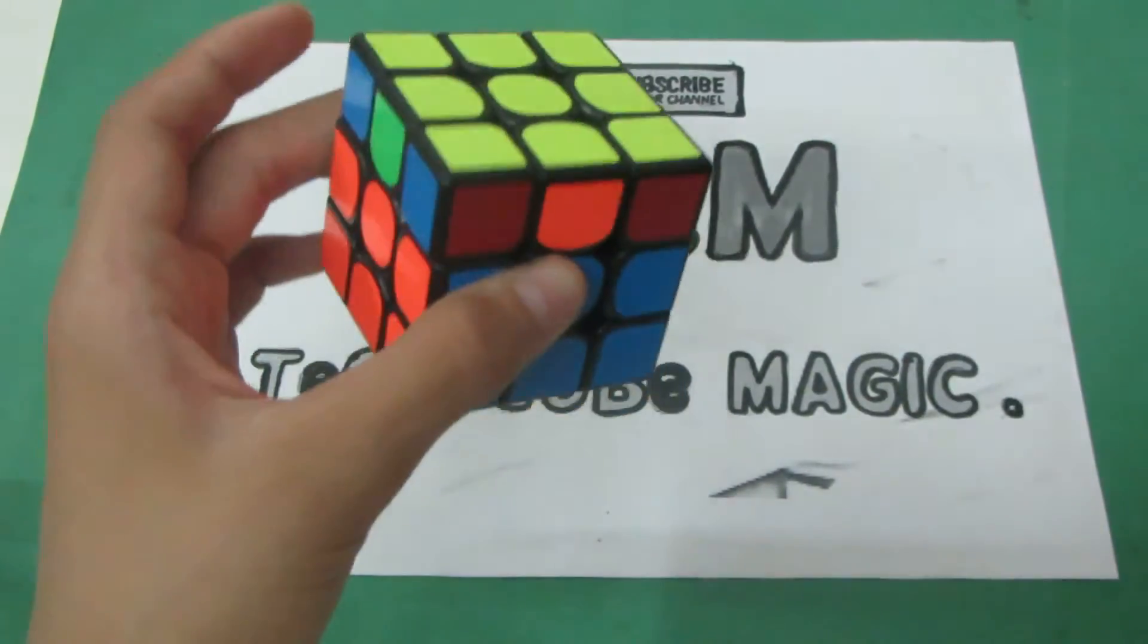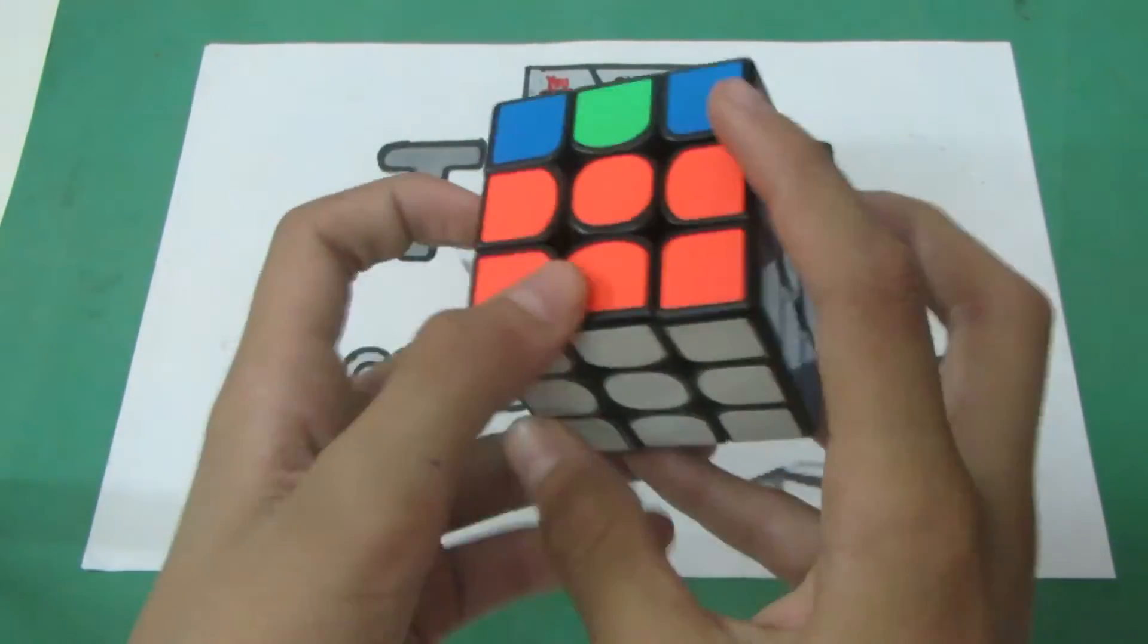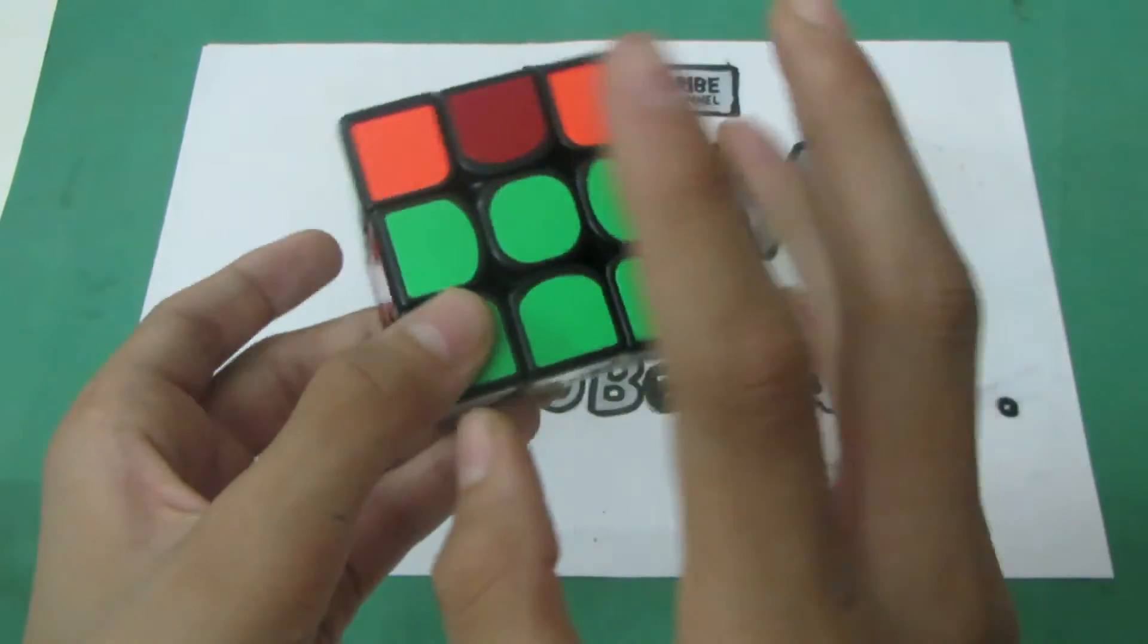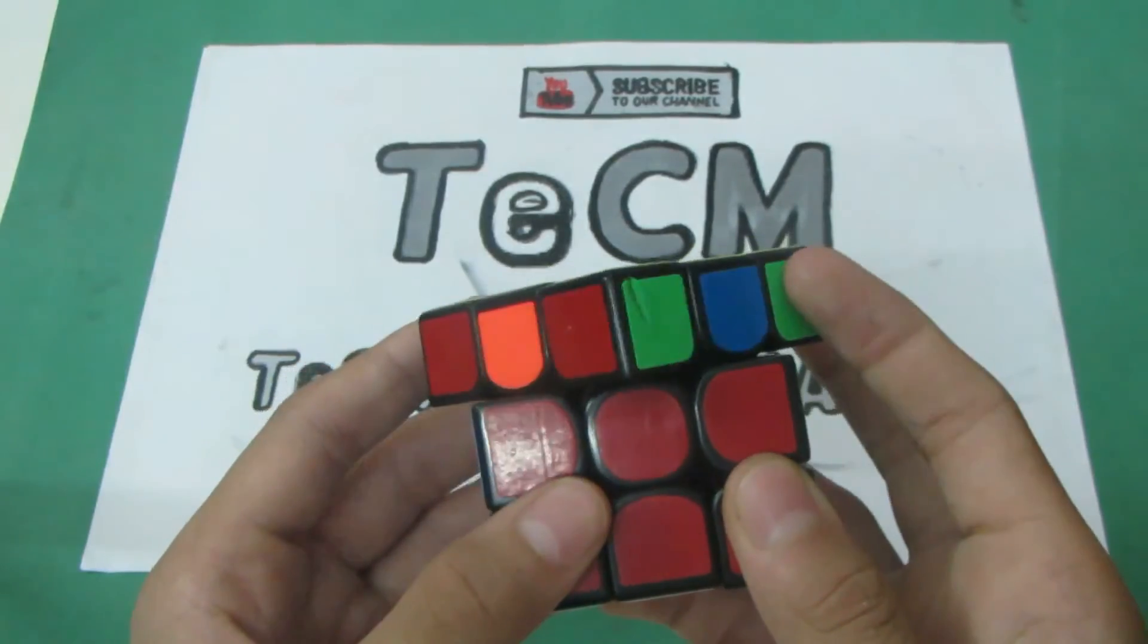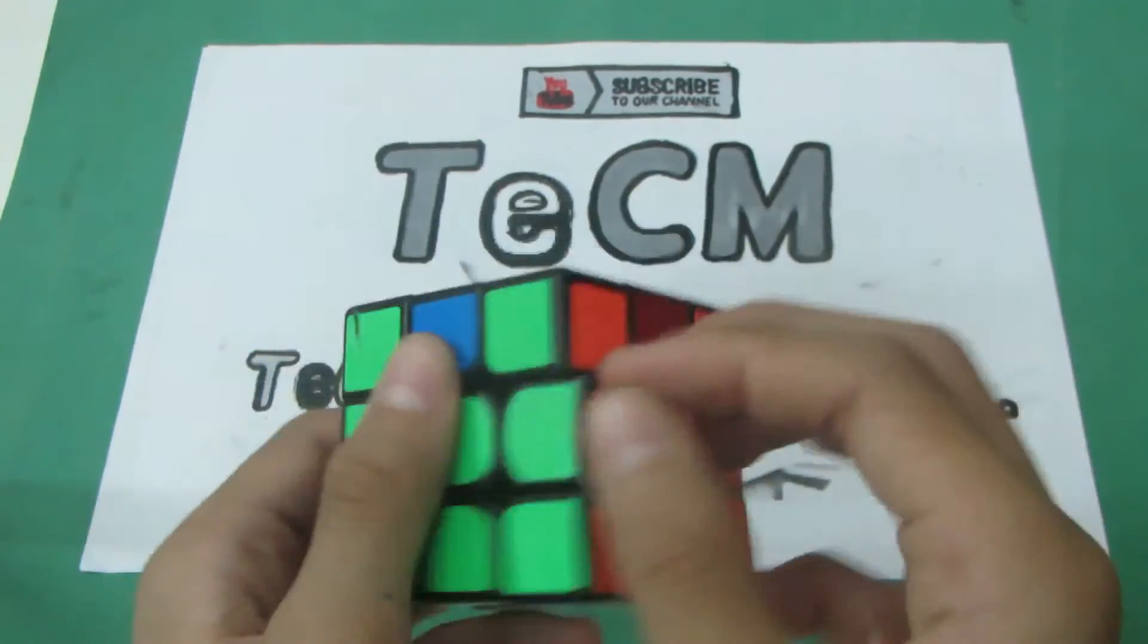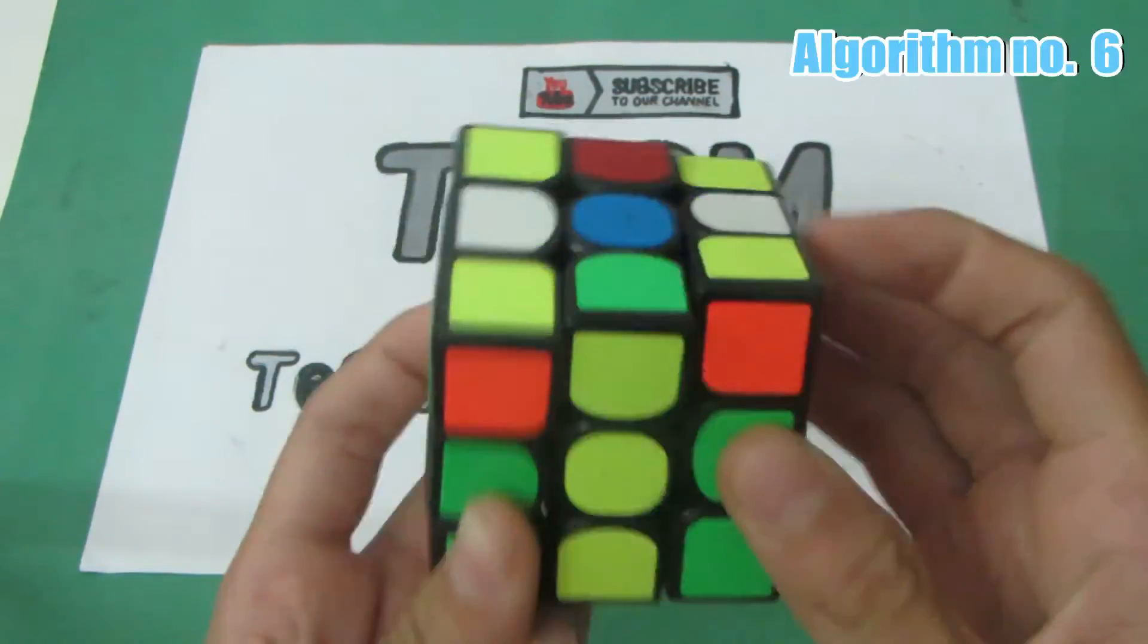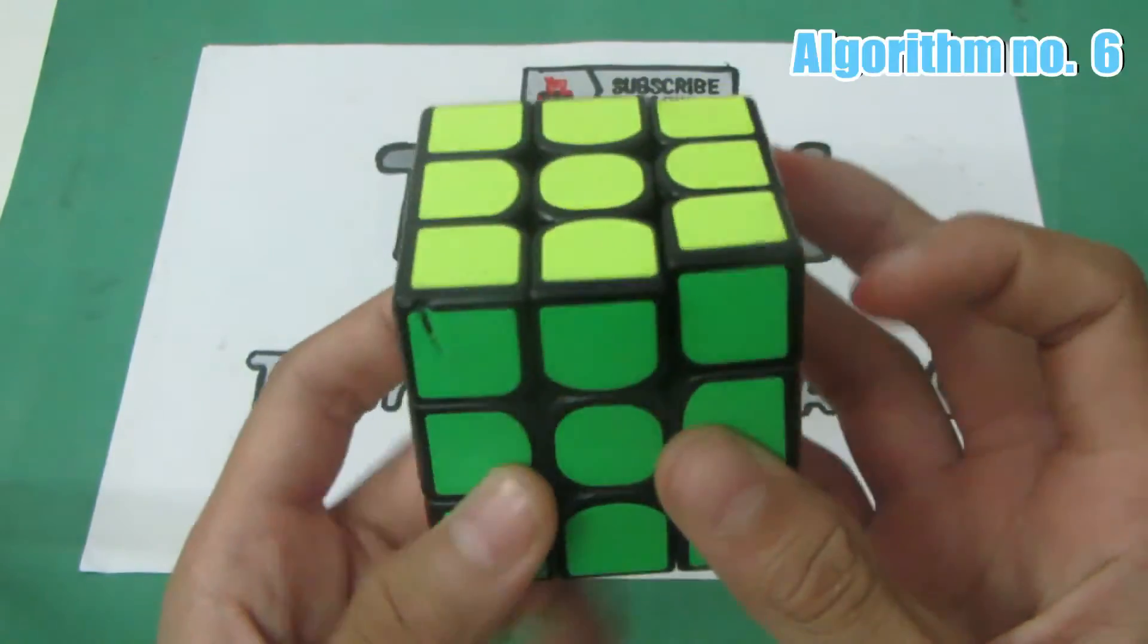Exception number three. You have all the corners rightly placed but they are not positioned. So you just need to match them up and do one of those six algorithms. And it's solved.